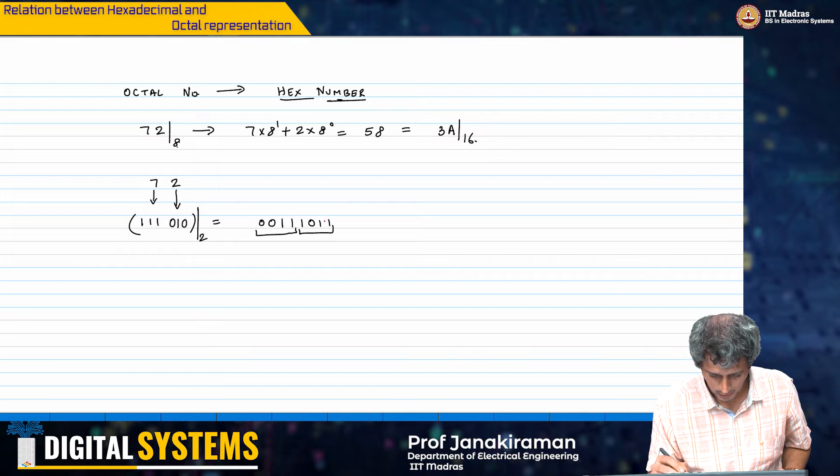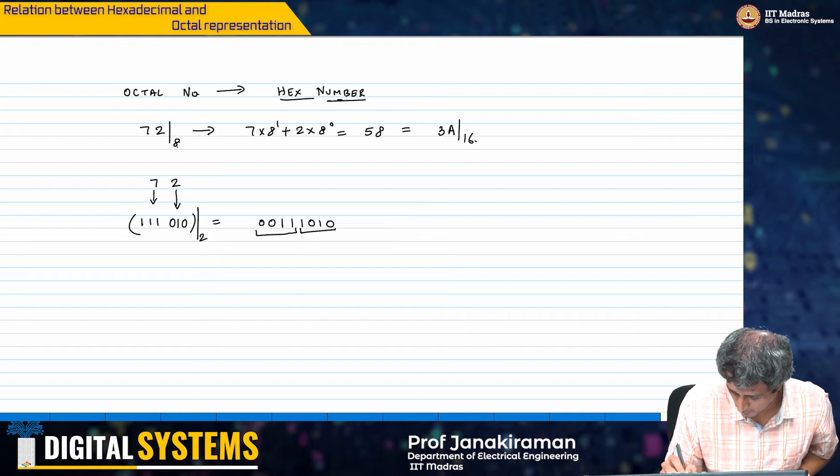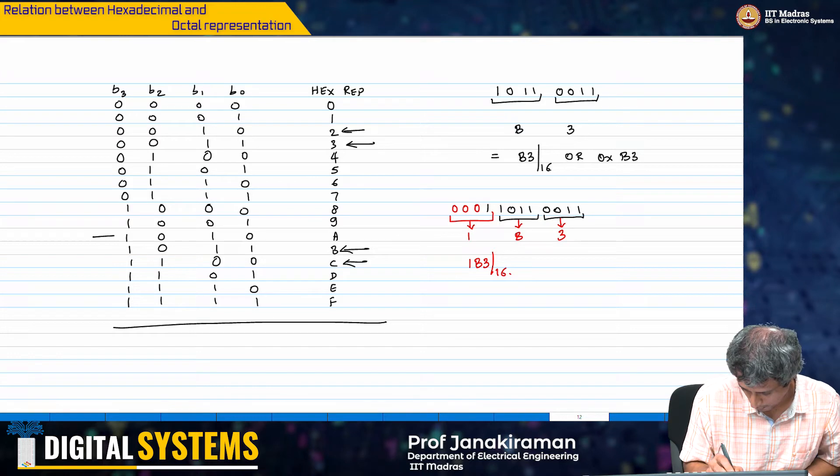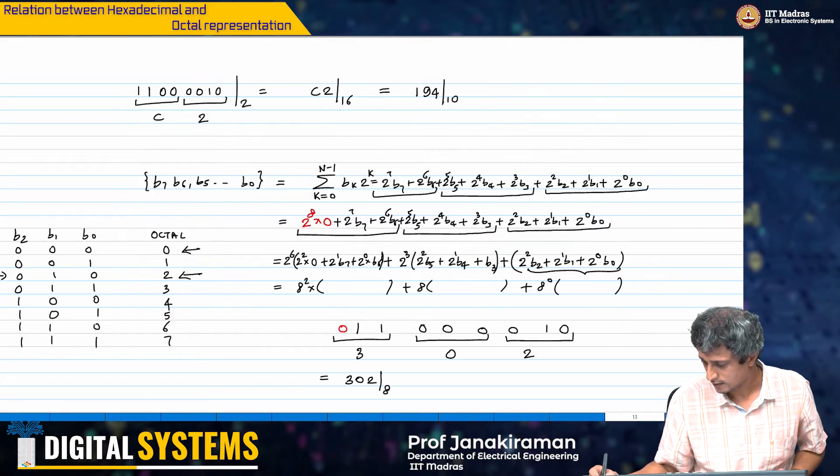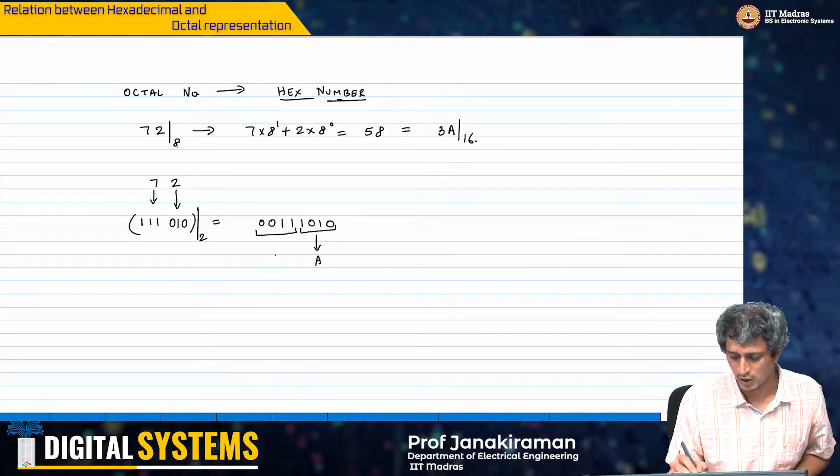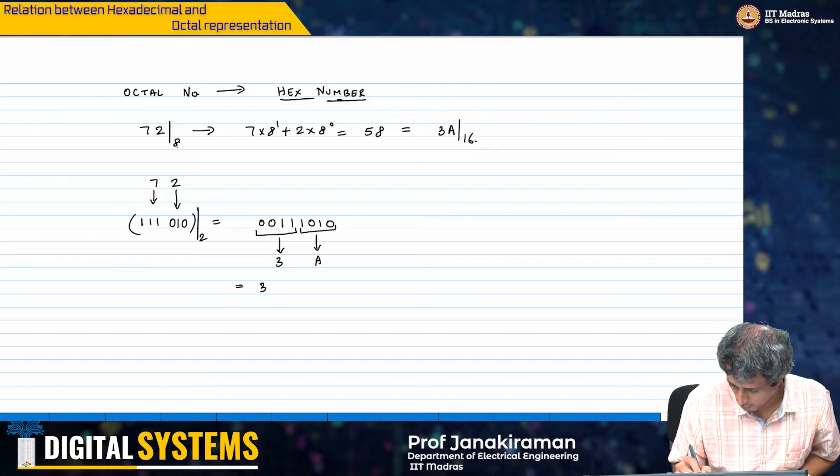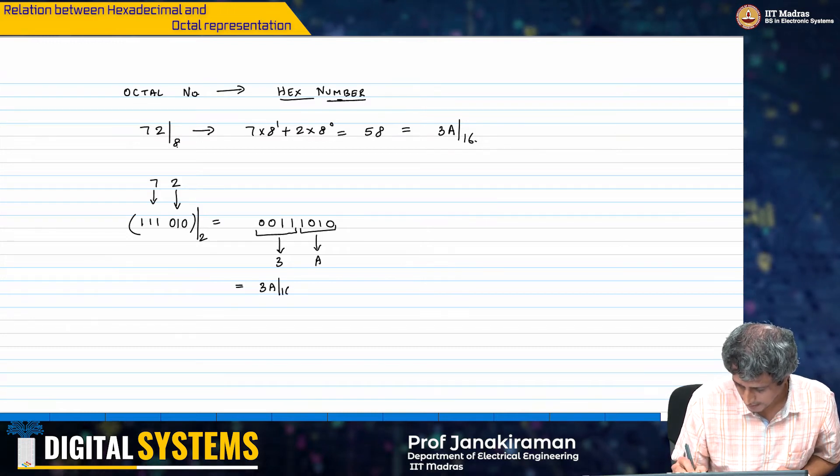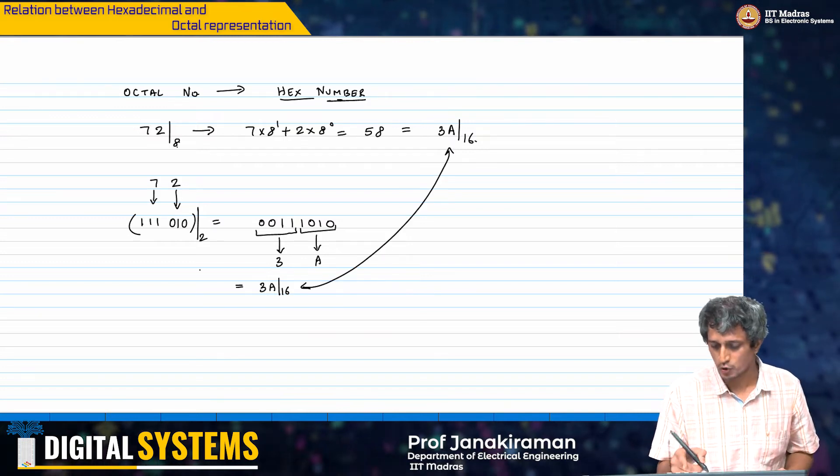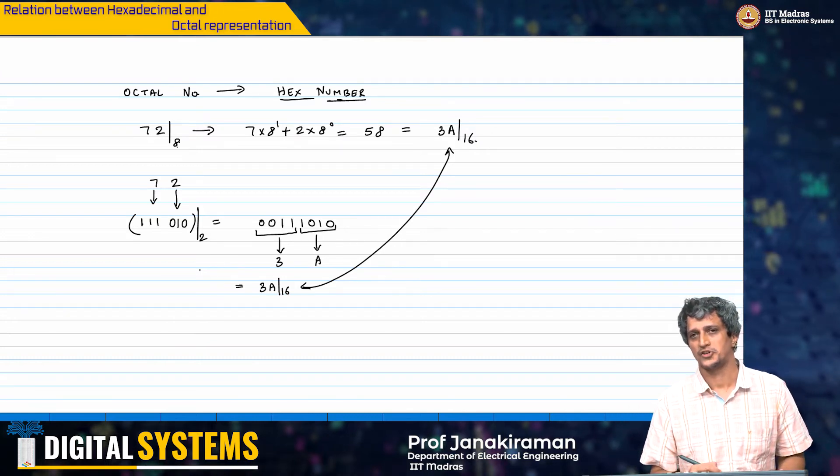Oh no, I think I got it wrong here. This should be 1010. I am sorry. I come here and then 1010 is here, which is A. And therefore this is A, and then 0011 is obviously 3. And therefore this is equal to 3A to base 16. And that is what we got going from octal to decimal and then coming back to the hexadecimal representation.